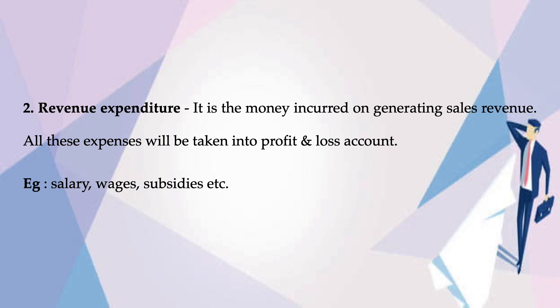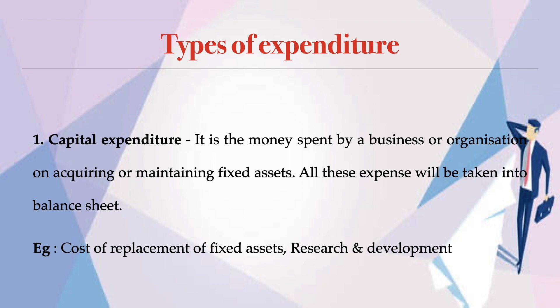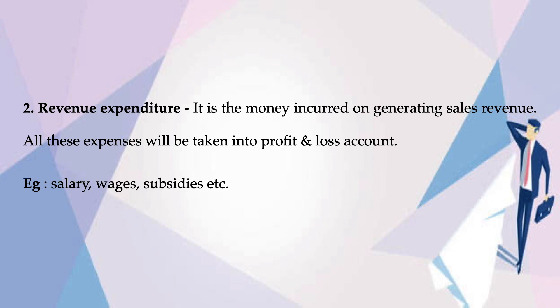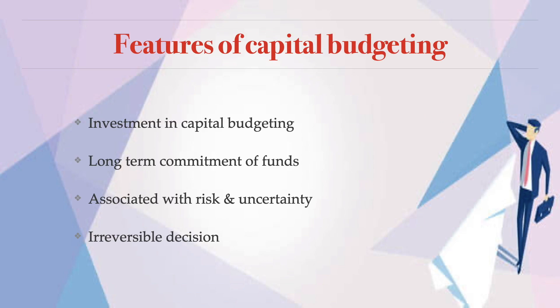Revenue expenditure helps in generating sales revenue. If you don't pay your labor and they don't work, the units or products won't be manufactured. You need to continuously procure raw materials and pay wages so production is complete — only then can you make and promote sales of your product. So these are the two main expenditures: capital expenditure and revenue expenditure.